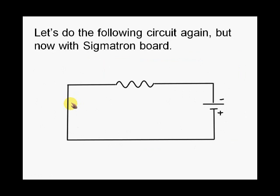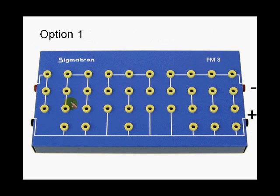This is the defining circuit again, but now with the actual Sigmatron board. Since we've already practiced with the design plan, let's try with the board itself. Here's the board. As an option, I'm trying to create that simple series circuit.